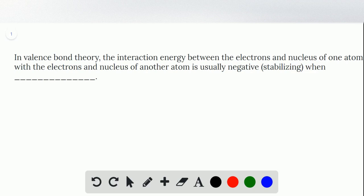First of all, the electrons are going to be attracted to the nucleus of the other atom, but they're going to be repelled by the other electrons. And the nucleus is going to be attracted to their electrons, but repelled by the other nucleus.